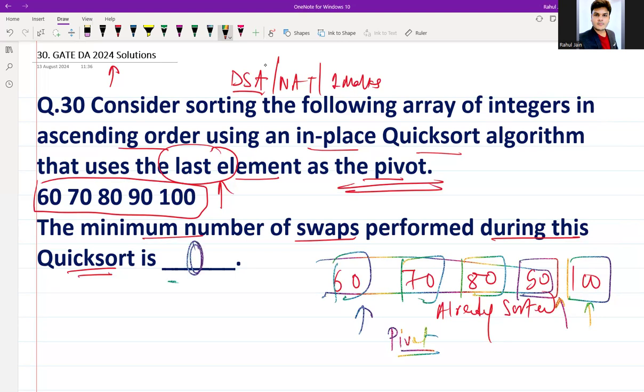So the answer is 0. The range is 0 to 0. It is the correct answer of this GATE question.